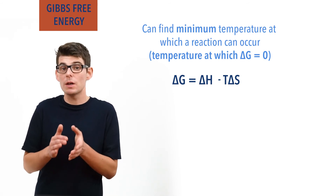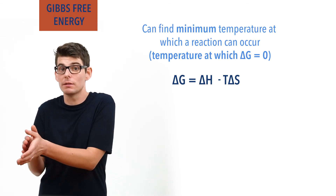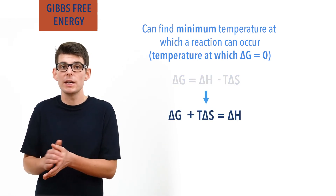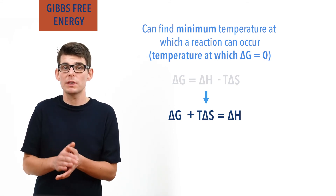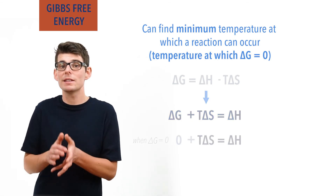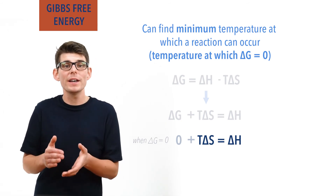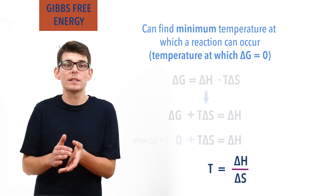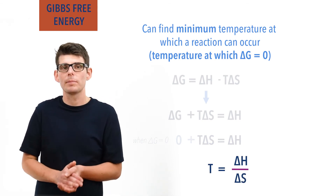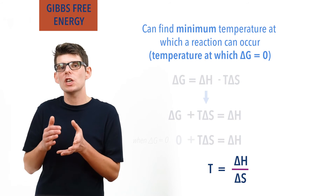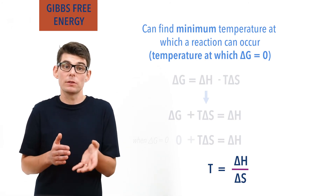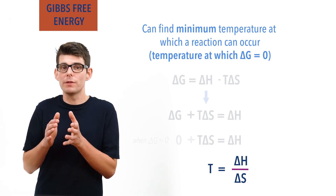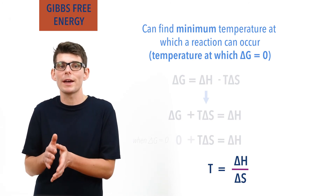If delta G equals delta H minus T delta S, then delta G plus T delta S equals delta H. When delta G equals zero, T delta S equals delta H. Dividing both sides by delta S gives T equals delta H divided by delta S. If we know the enthalpy change and entropy change based on standard entropies of reactants and products, we can use this equation to find the minimum temperature at which the reaction becomes feasible.